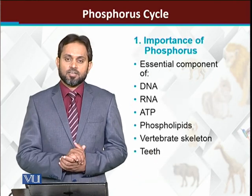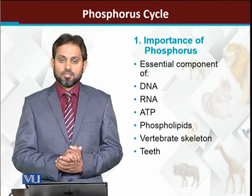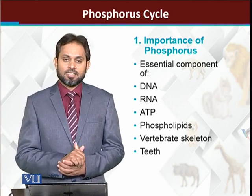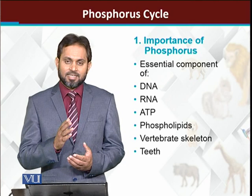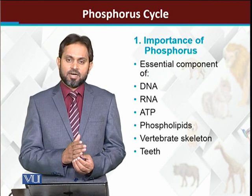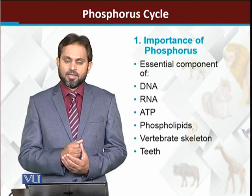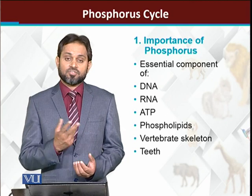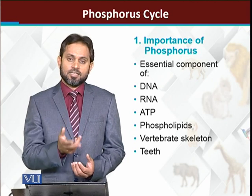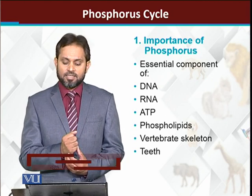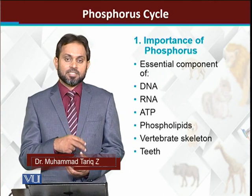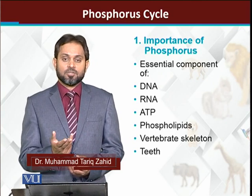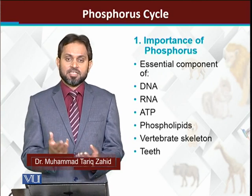First, what is the importance of phosphorus? Phosphorus is very important for animals and plants because it is an essential part of nucleic acids. If we talk about DNA and RNA, the phosphate group is basically what phosphorus represents. Similarly, ATP — adenosine triphosphate — is also a nucleotide and is the energy currency of the cell.